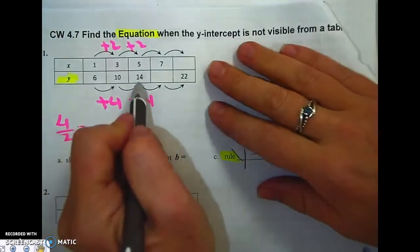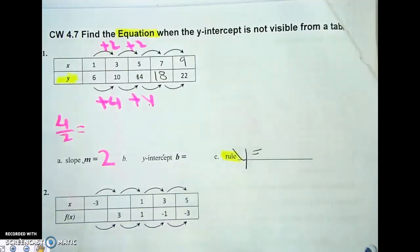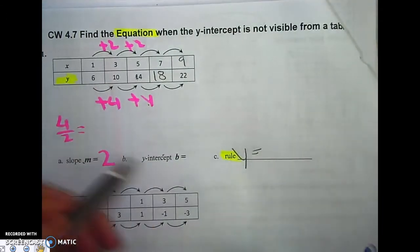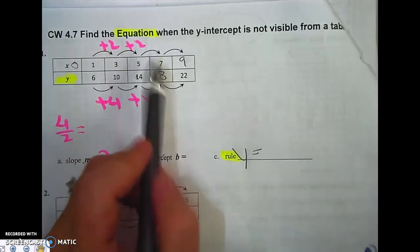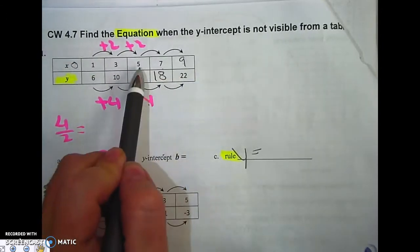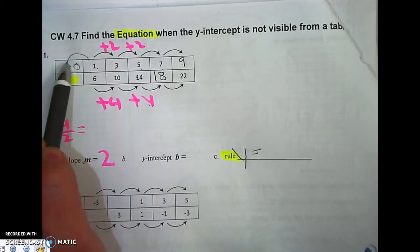Let me fill this in. 14 plus 4 is 18, and 7 plus 2 is 9. Now, there's a problem because my y-intercept is what has the 0, but it doesn't follow the pattern 9, 7, 5, 3, 1, negative 1. It skips right over.